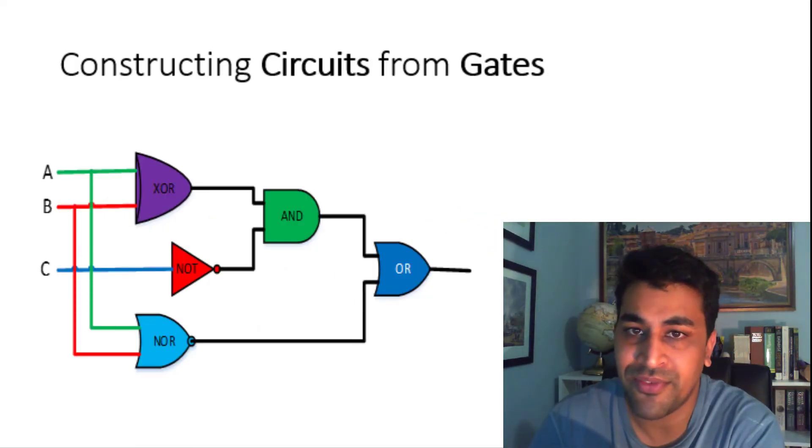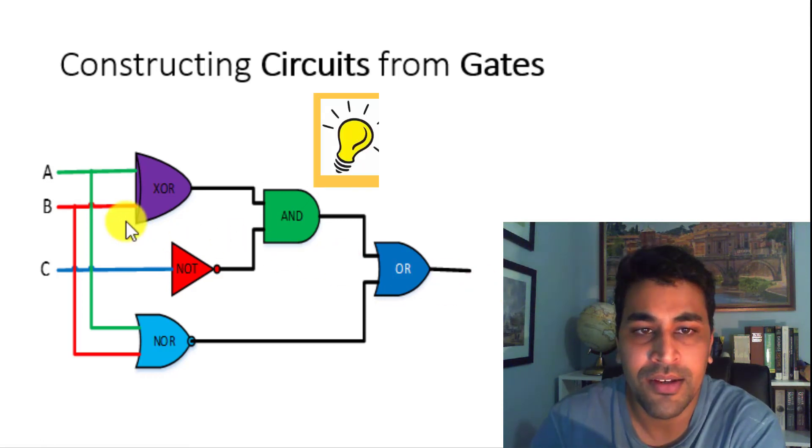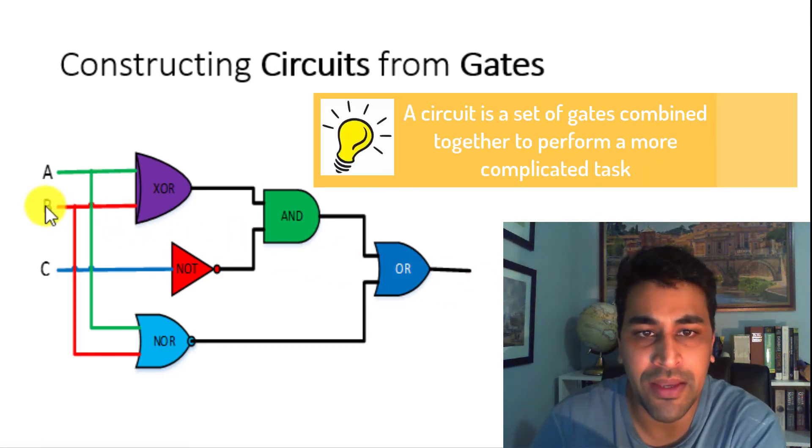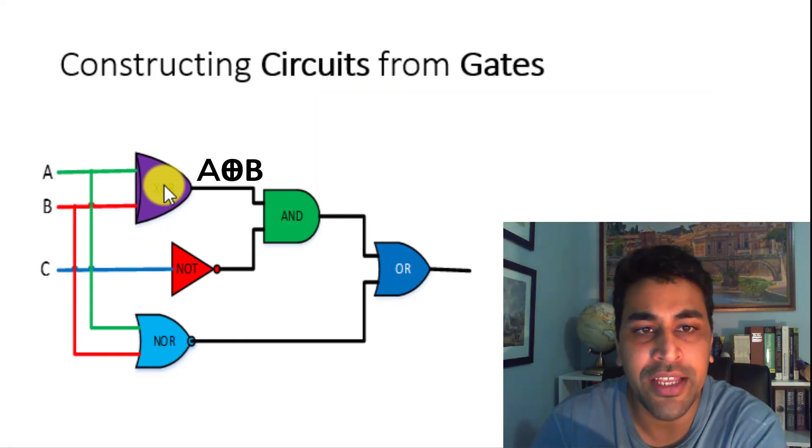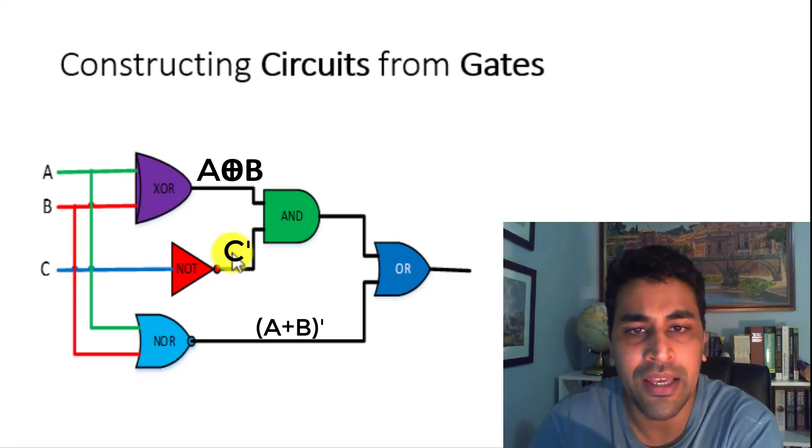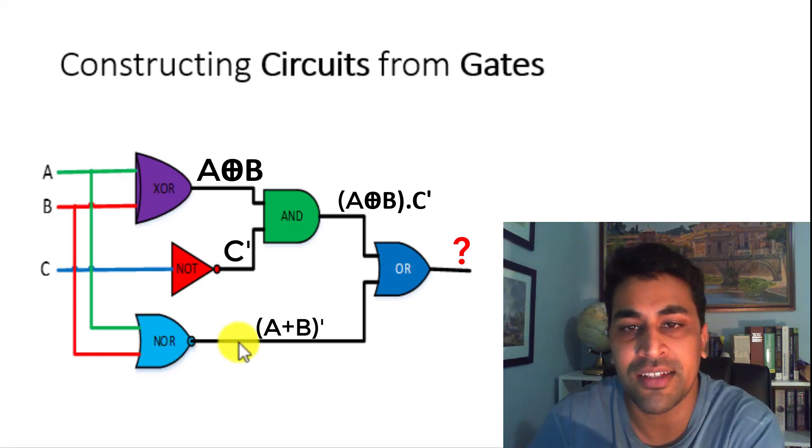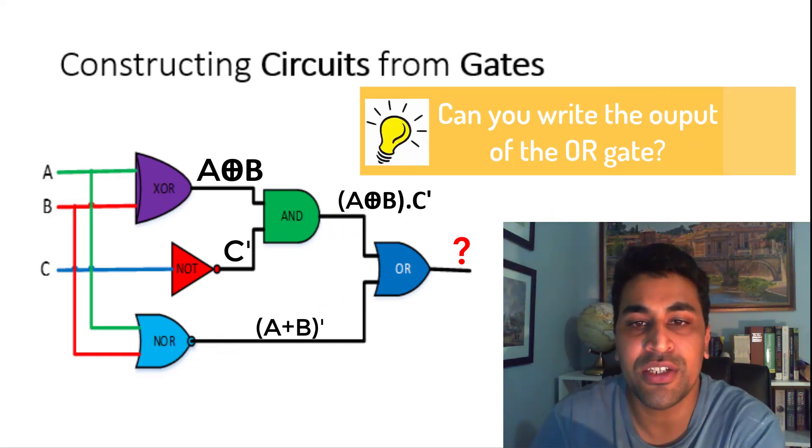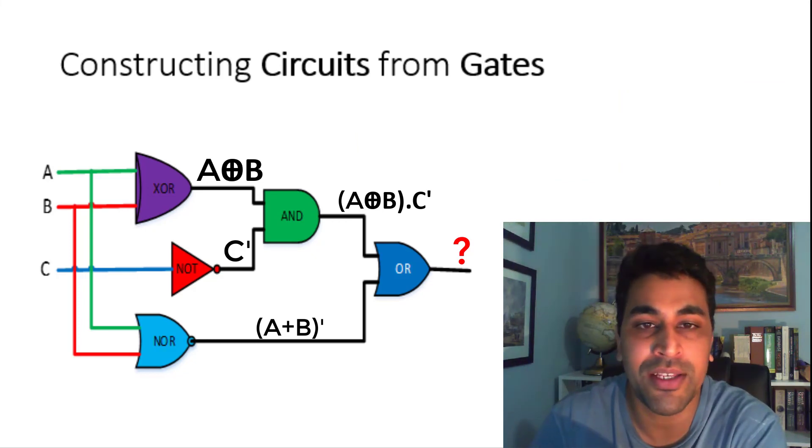Using the gates we described in this video, we can construct circuits. Suppose we have inputs A and B that go into an XOR gate. We can share the input from A and B to go into another gate, a NOR gate. We can have a third input C which goes into a NOT gate, and together with the output of the XOR gate from A and B, C-NOT can go into an AND gate. This AND gate can also go into an OR gate, with an input which is an output of the NOR gate. By manipulating these electric signals, you can achieve very complicated expressions using circuits to solve some interesting problems that we will explore in later videos.